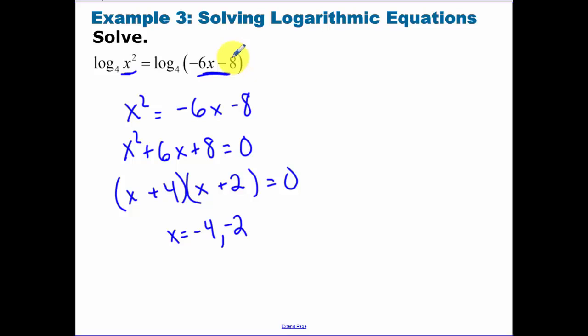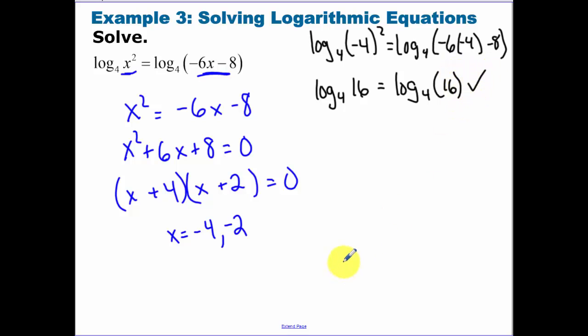Now remember the insides can't be negative. The answers could possibly be negative. So let's do a quick check. Let's check negative 4. Okay, so negative 4 squared. Negative 4 squared is 16. So my inside didn't end up being negative because of that squared. Now I have a 24 minus an 8, that is also 16. So negative 4 works out.